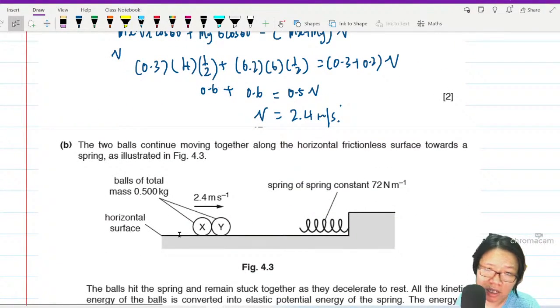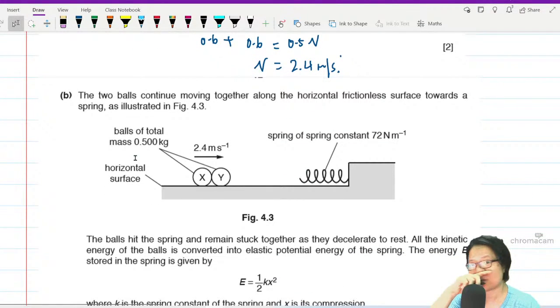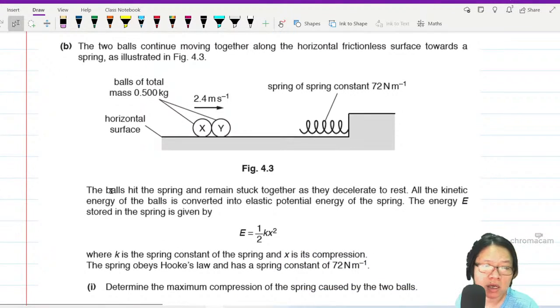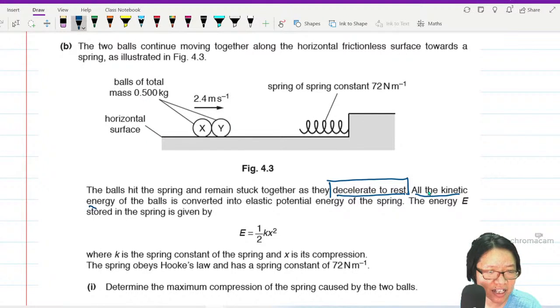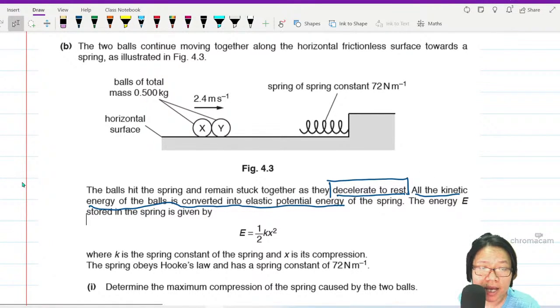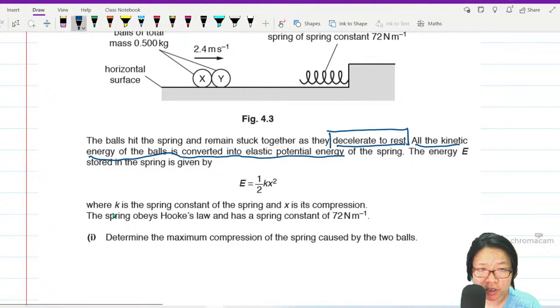So they continue moving together along the horizontal frictionless surface towards the spring. You have the spring constant, you have the speed. The ball hits the spring and remains stuck together as they decelerate to rest. They even very helpfully tell you all the kinetic energy of the balls is converted to elastic potential energy. 100% conversion.